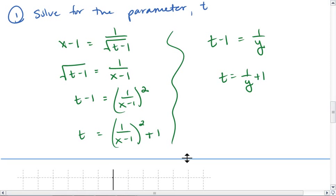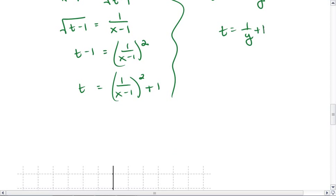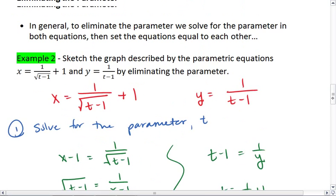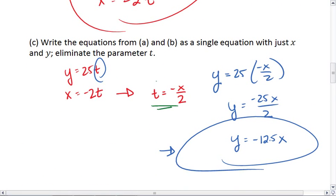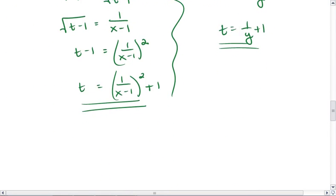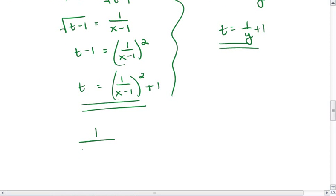Now let's set these equal to one another. Please note, while solving for t in both of them is one solution, you could have also done what we did earlier, where you solve for t in one equation and then substitute that in for the t in the other equation. Both are valid ways to approach this problem. I'm just showing you another way.